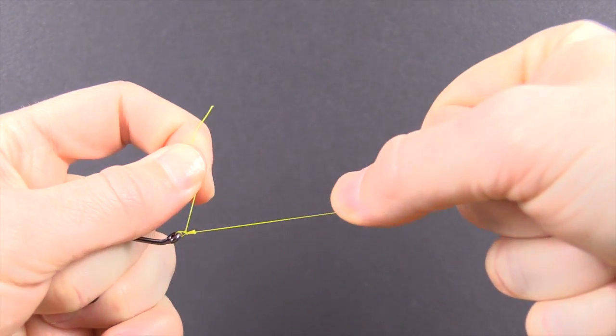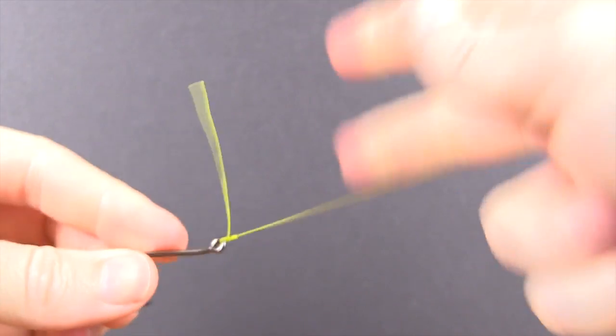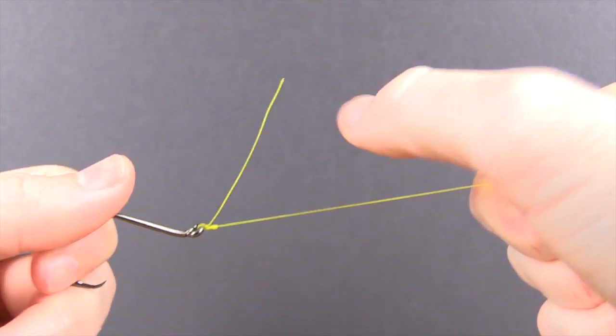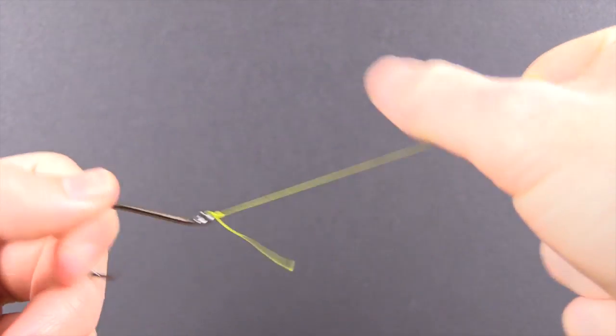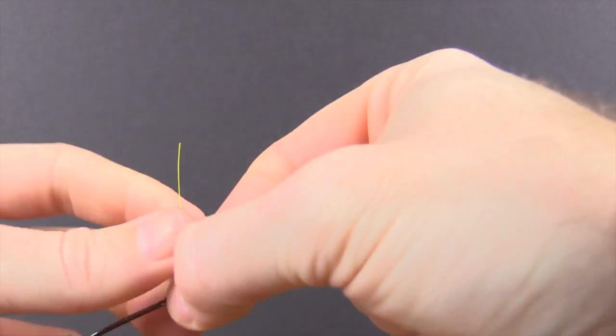It's basically a slip knot right now, and we're going to put a little more pressure on it with the tag end. And now that it's there with some good amount of pressure, I'm just going to pull on the main line and just solidify the knot. And there you are. It's just a nice looking small knot.